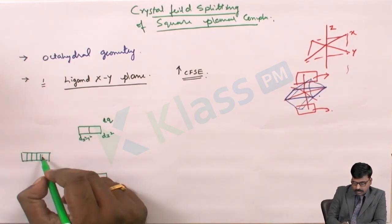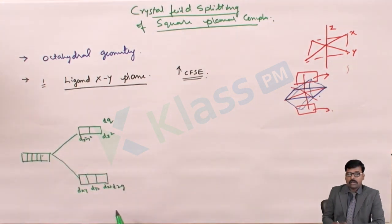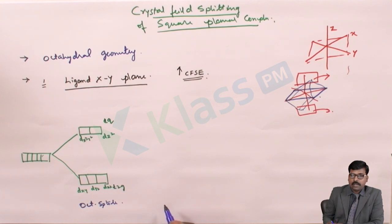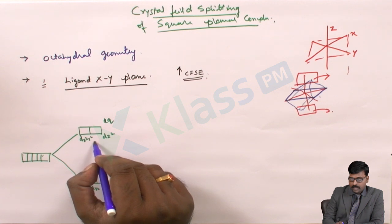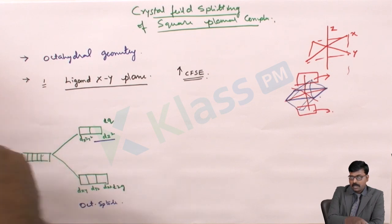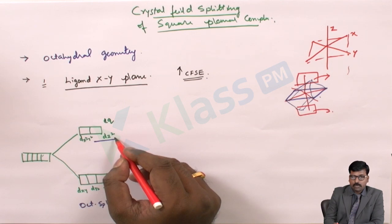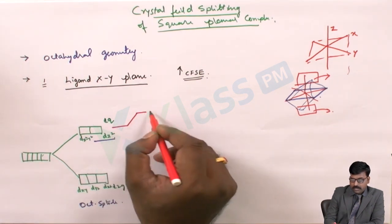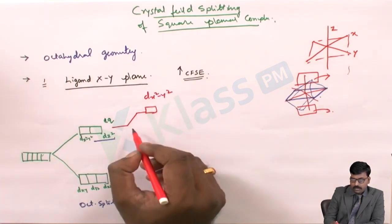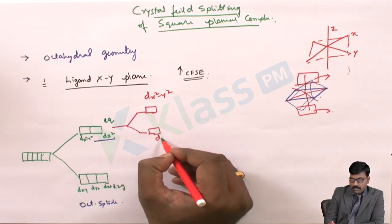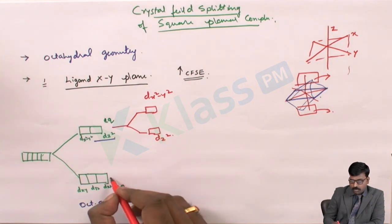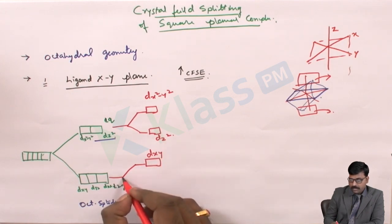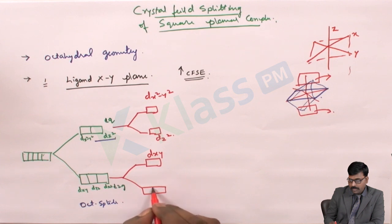This is the normal ground level and this is the octahedral splitting. Because no ligand is approaching on the z axis, the orbitals present on the z axis will exert less energy. Since ligands are approaching only from the xy plane, x²-y² will experience a higher energy level. It will further split: dx² and dz² will experience differently. In the same way, the t2g group will also experience the same effect, and the dxy orbital will experience more energy than the already-split t2g.